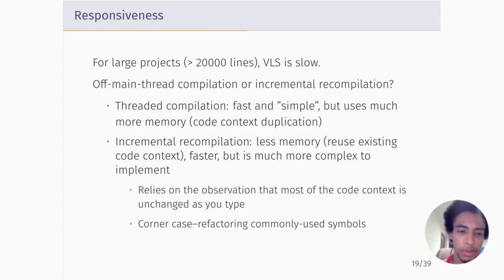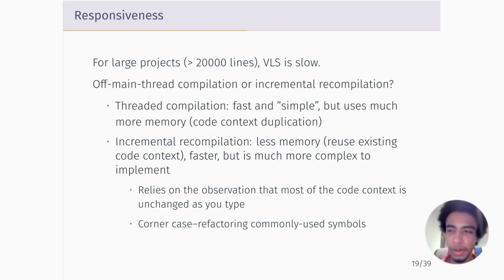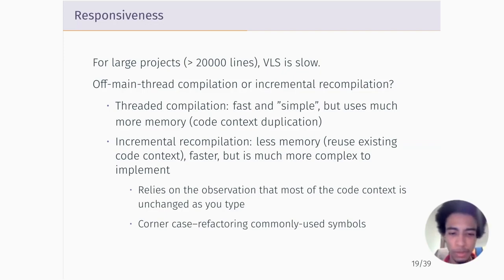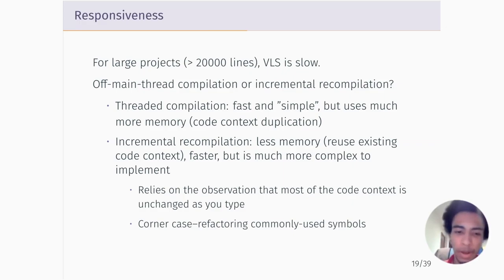Another approach is to observe that when you update a file, you're not really changing much of the whole project — you're changing a very small part of it. So there are a lot of code nodes that would be exactly the same once you finish recompiling. Implementing incremental recompilation is an approach I'm leaning towards. Of course, if you're refactoring a symbol that's used everywhere, you can't get around having to recompile everything, so it will be slow in that case — but I think that will be more the exception than the rule.